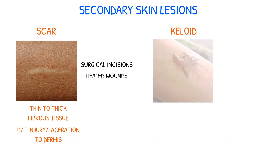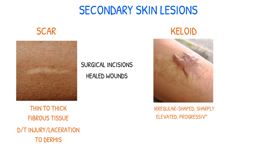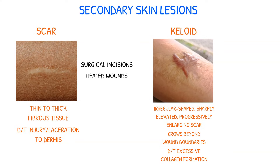A keloid is an irregularly shaped, sharply elevated, progressively enlarging scar that grows beyond the boundaries of the wound. This is caused by excessive collagen formation during the healing process. Keloids are unlike hypertrophic scars, which do not extend beyond the border of the injury, and keloid formation can occur following surgery.